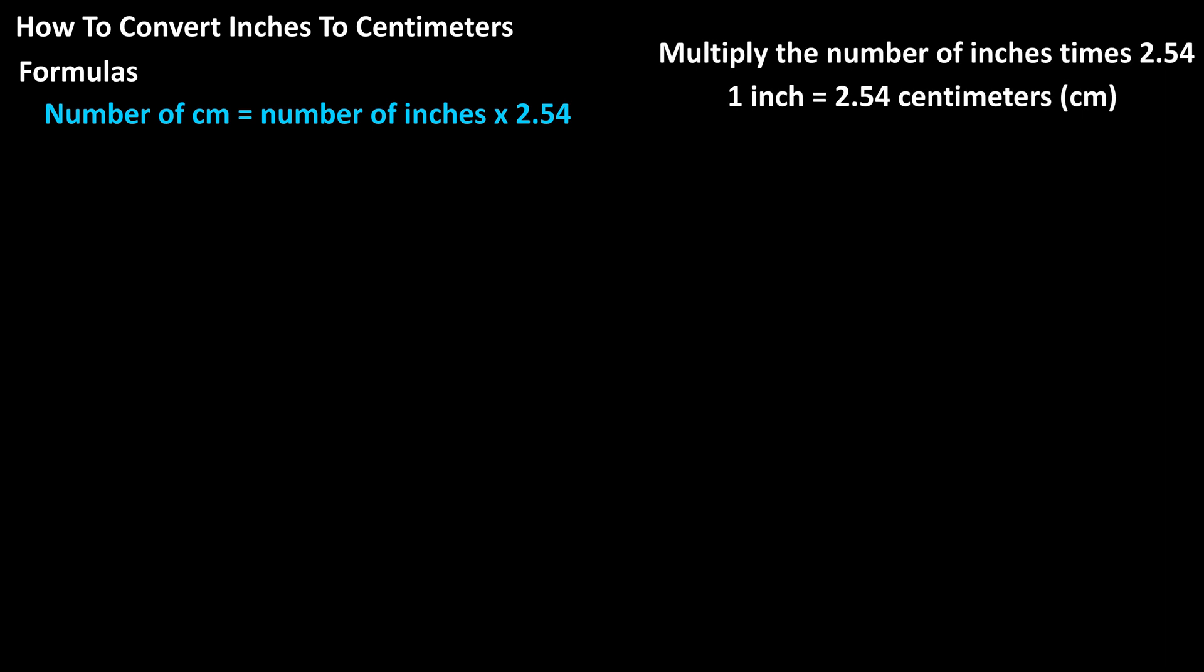The formula to convert inches to centimeters is the number of centimeters equals the number of inches times 2.54. We multiply the number of inches times 2.54 as there are 2.54 centimeters in one inch.